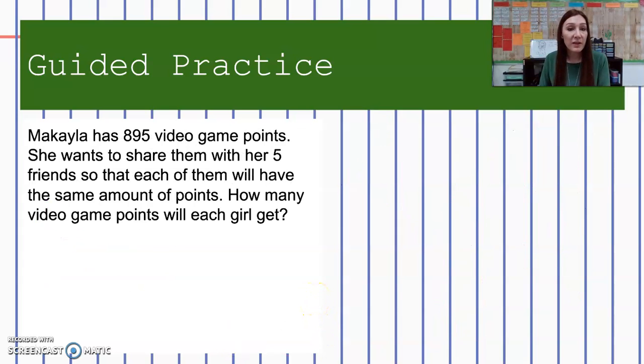Our next problem says, Makayla has 895 video game points. She wants to share them with her five friends so that each of them will have the same amount of points. How many video game points will each girl get? So I have to take this 895 and I'm dividing it by six. It's Makayla and her five friends, so Makayla plus her five friends is going to be six. So I'm going to do my multiples of six: 6, 12, 18, 24, 30, 36, 42, 48, 54.